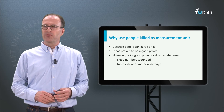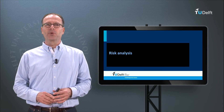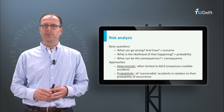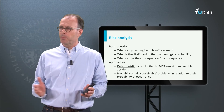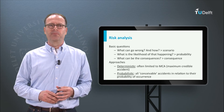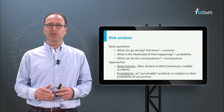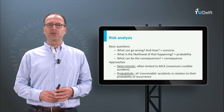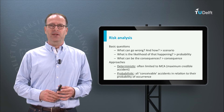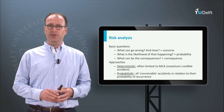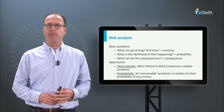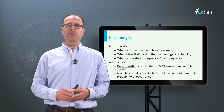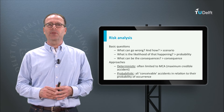We now turn to the topic of risk analysis. The main questions are: (1) What can go wrong? (2) How? (3) What is the likelihood of that happening — the probability? (4) What can be the consequences? With regard to risk analysis, there are two approaches: the deterministic and the probabilistic. The deterministic approach is often limited to preventing maximum credible accidents, like exposure of a core of a nuclear reactor or a truck containing a hazardous chemical running into a building — things we simply don't want to happen. In a probabilistic approach, we consider probabilities of particular accidents.